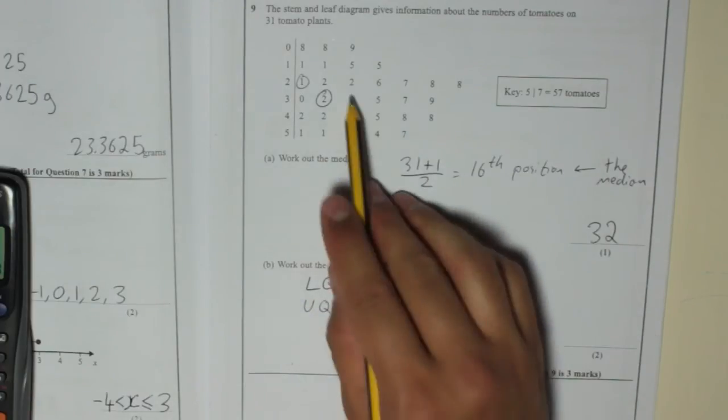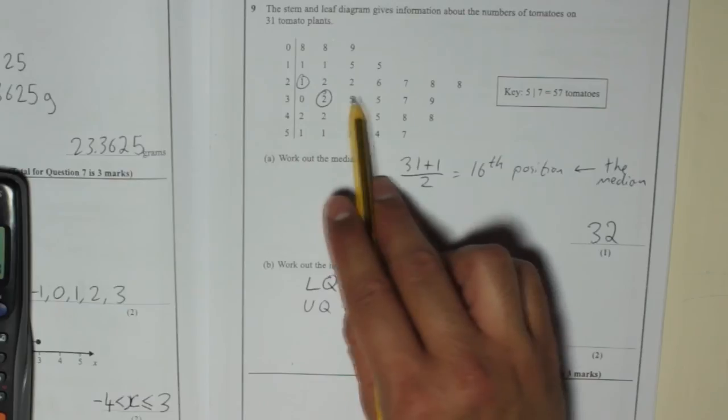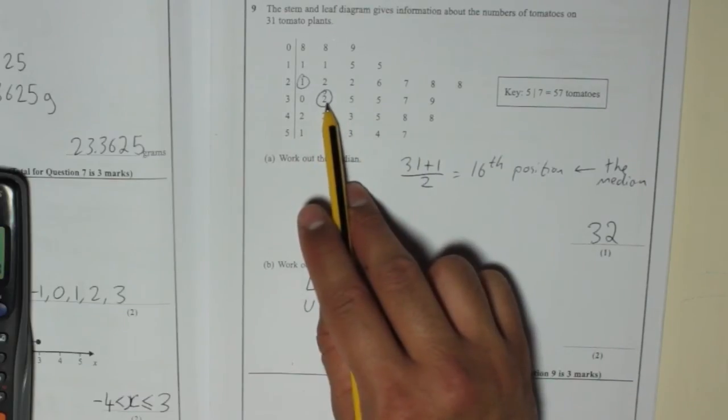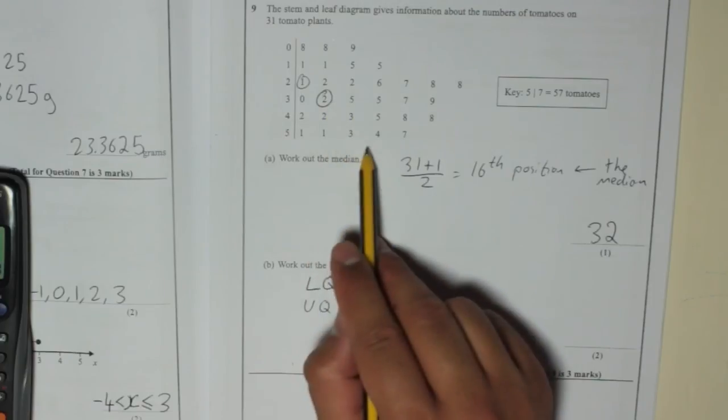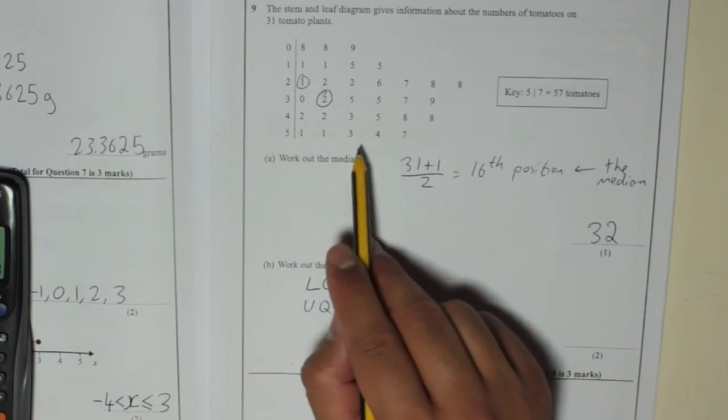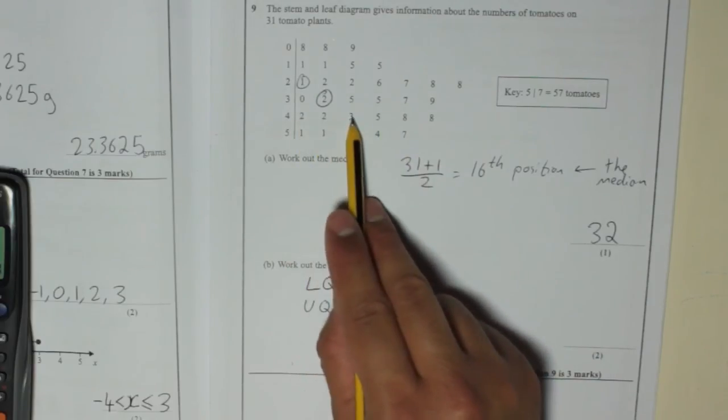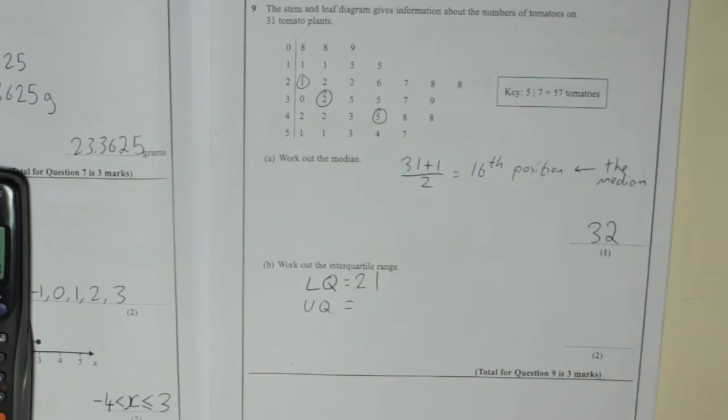The upper quartile, that's the same again but using the upper half of data. And there's again, there's 15 there above the median of 32. So again, there's 15 there. The middle is going to be 15 plus 1, 16, divided by 2 is 8. So the 8th one. 1, 2, 3, 4, 5, 6, 7, 8. 45.